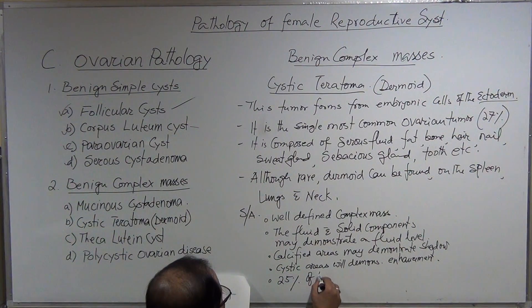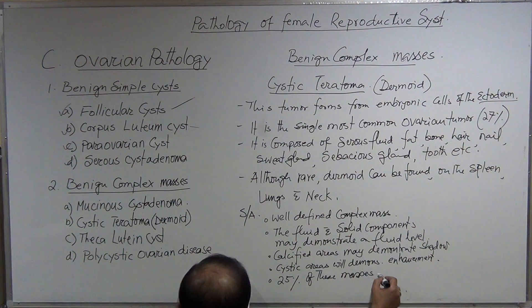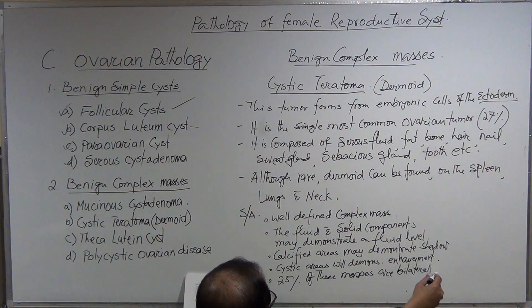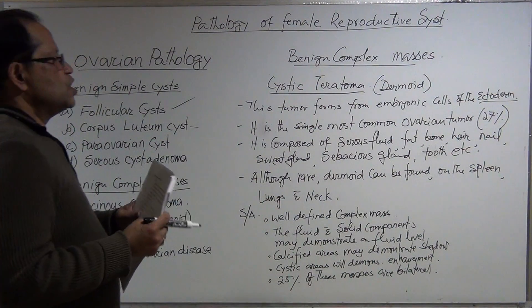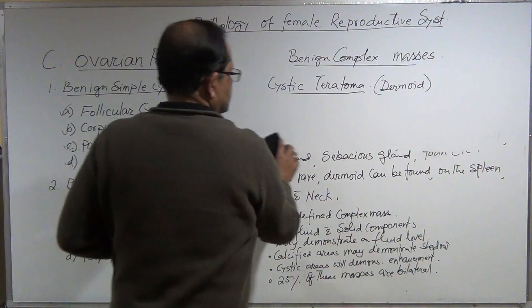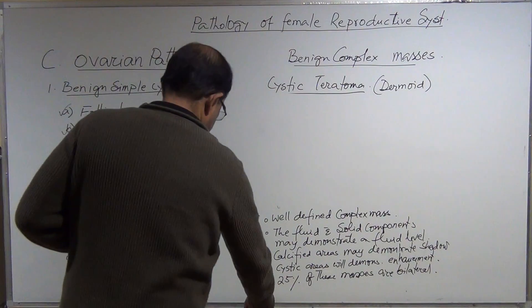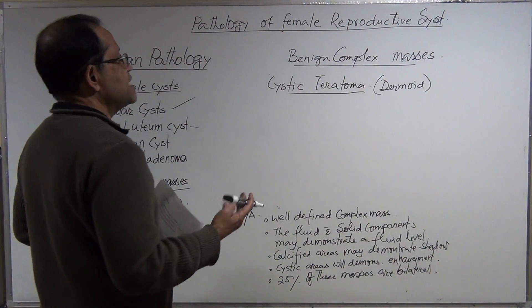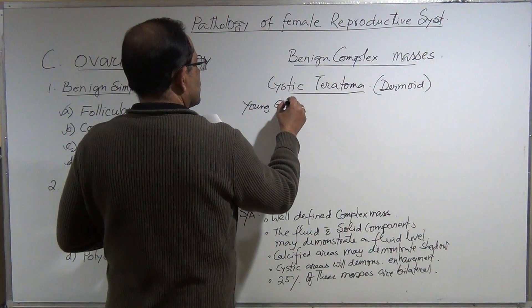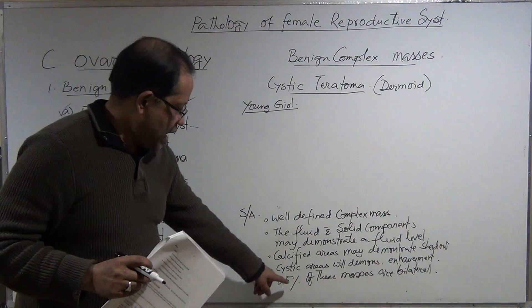Twenty-five percent of these masses are bilateral. I will now draw the diagram about the cystic teratoma and its clinical importance. Sonographic values are very important. Consider a young girl having this tumor—25% are bilateral.